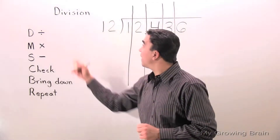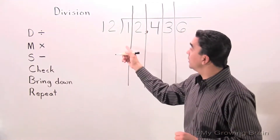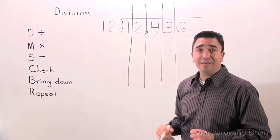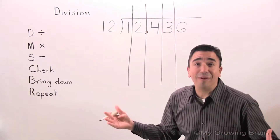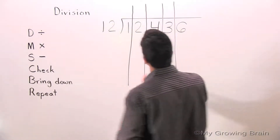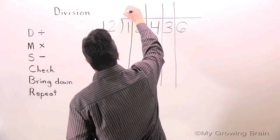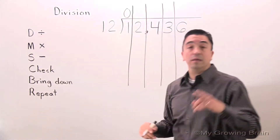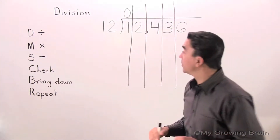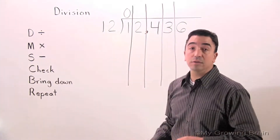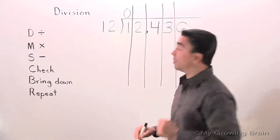First step: Divide. 1 divided by 12 — can we fit 12 into 1? Can't do it. Use a 0. Next step: Multiply. 12 times 0 equals 0.